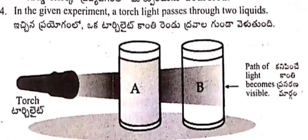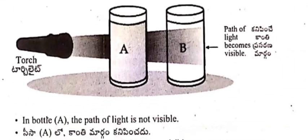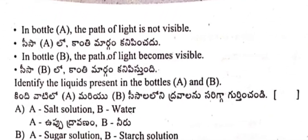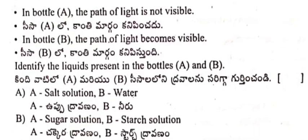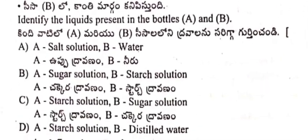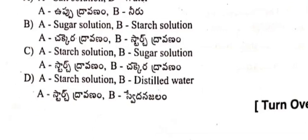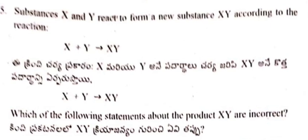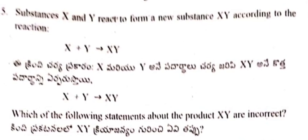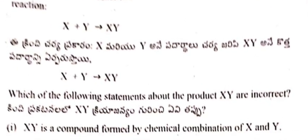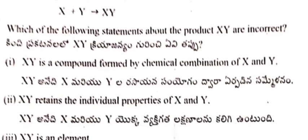Question 14: In a given experiment, a torch light passes through two liquids. In bottle A the path of light is not visible; in bottle B the path of light becomes visible. Identify the liquids present in bottles A and B.